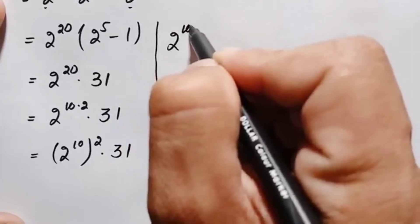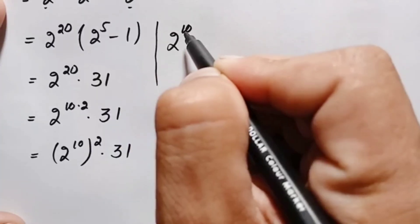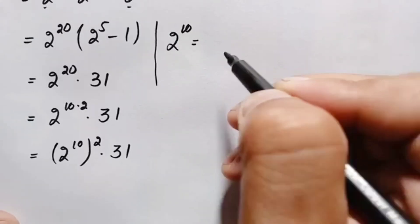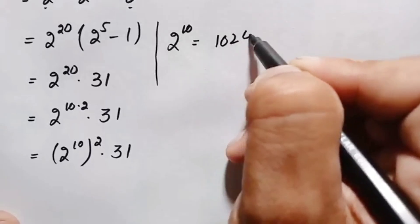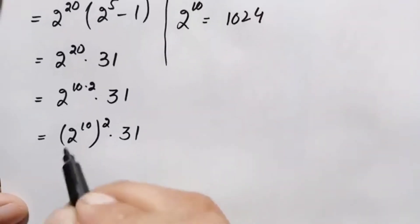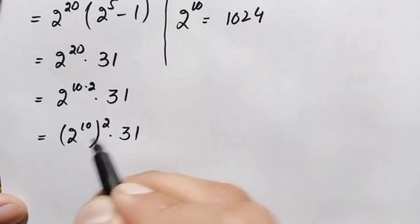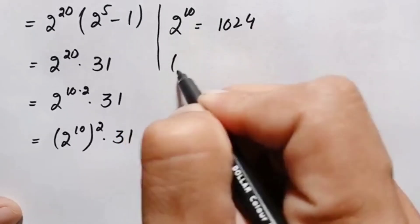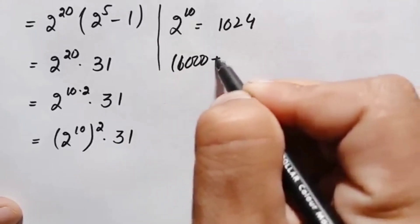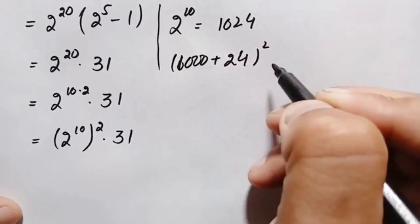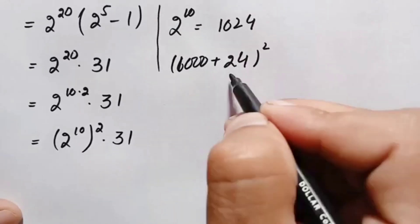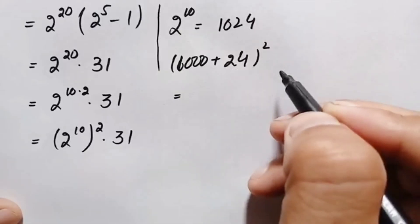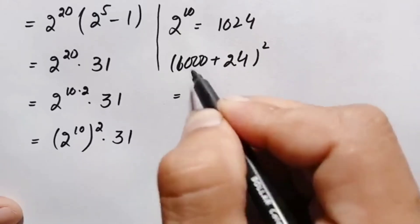2 raised to power 10 means multiplying 2 ten times, which gives the well-known value of 1024. We now need to square 1024. We write 1024 as the sum of 1000 plus 24, and apply the algebraic identity: a plus b whole square equals a squared plus b squared plus 2ab.